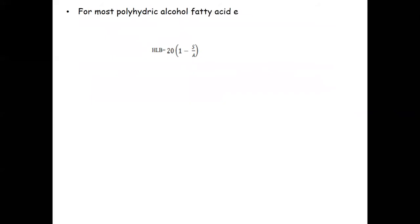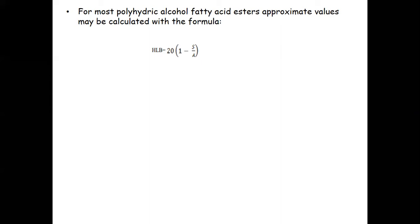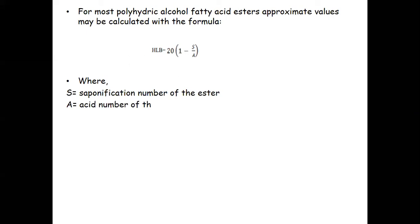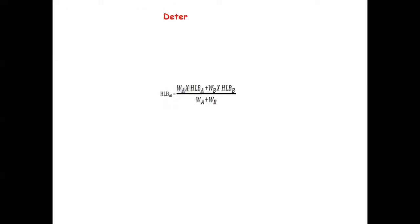For most polyhydric alcohol fatty acid esters, an approximate HLB value may be calculated using the formula: HLB = 20 × (1 − S/A), where S is the saponification number and A is the acid number of that substance.